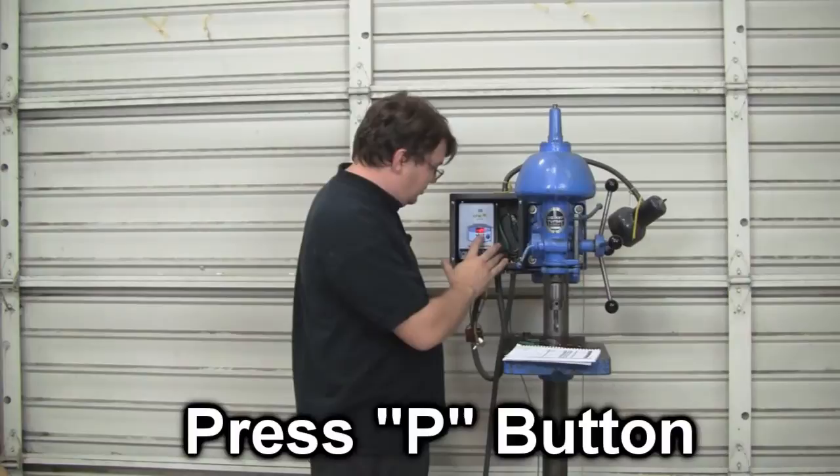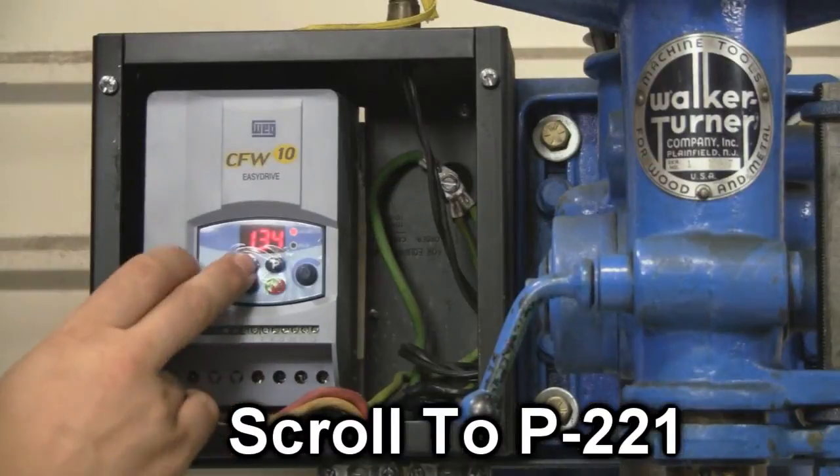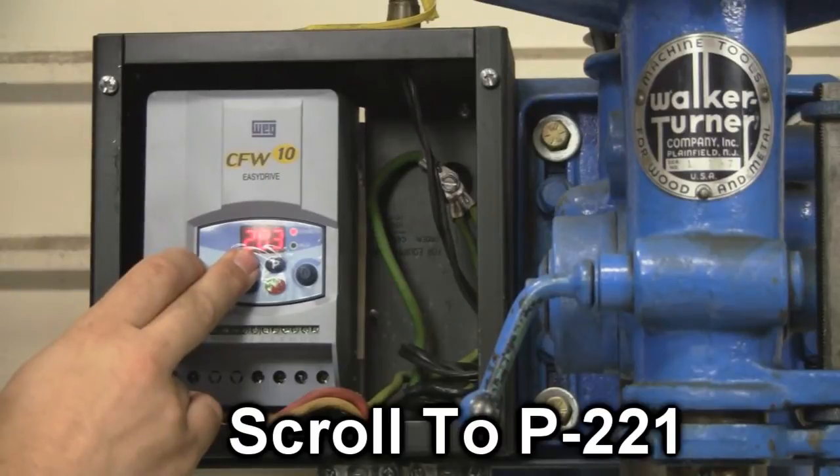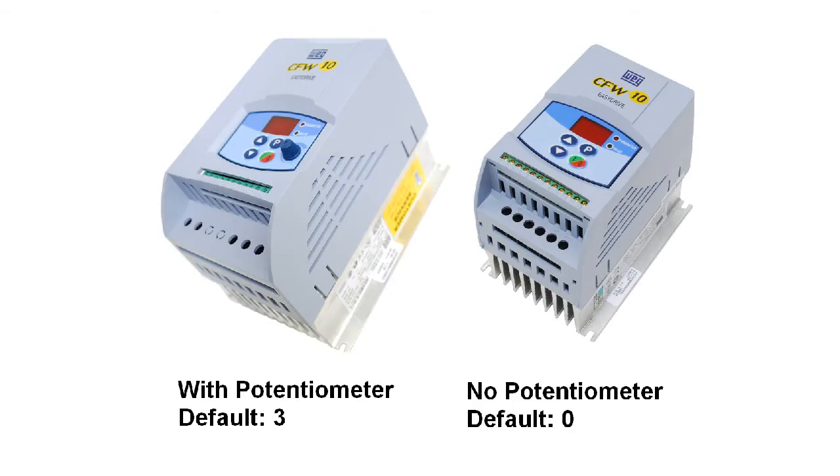I need to go into the menu by pressing P, and I need to scroll to P221, like I said, and I need to go ahead and change this. The default is 3 for this particular version. It will be 0 for standard style inverters.